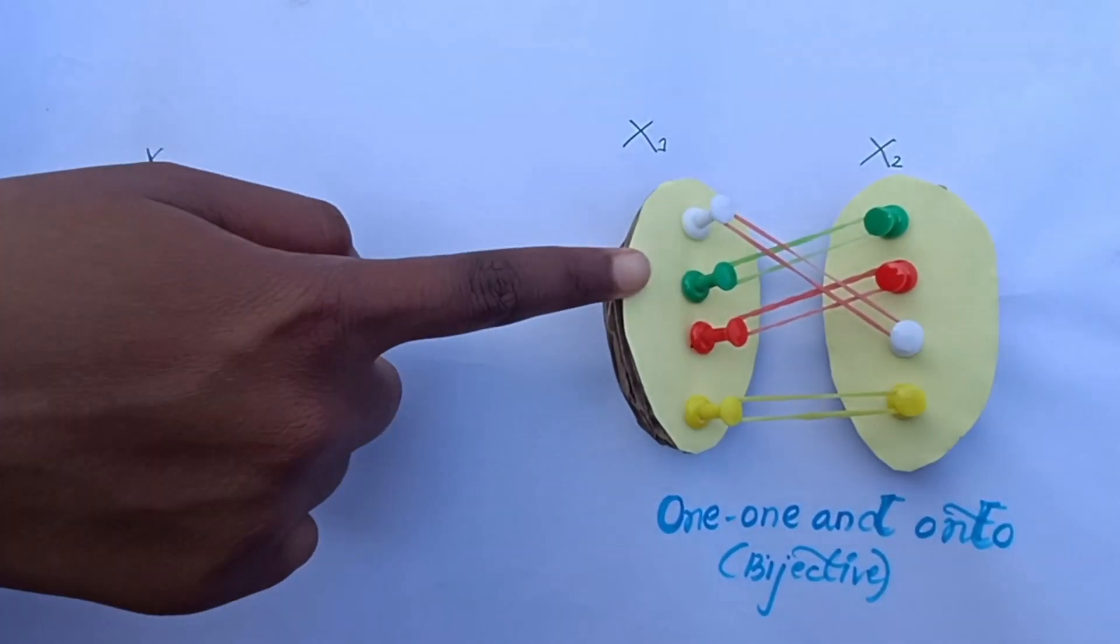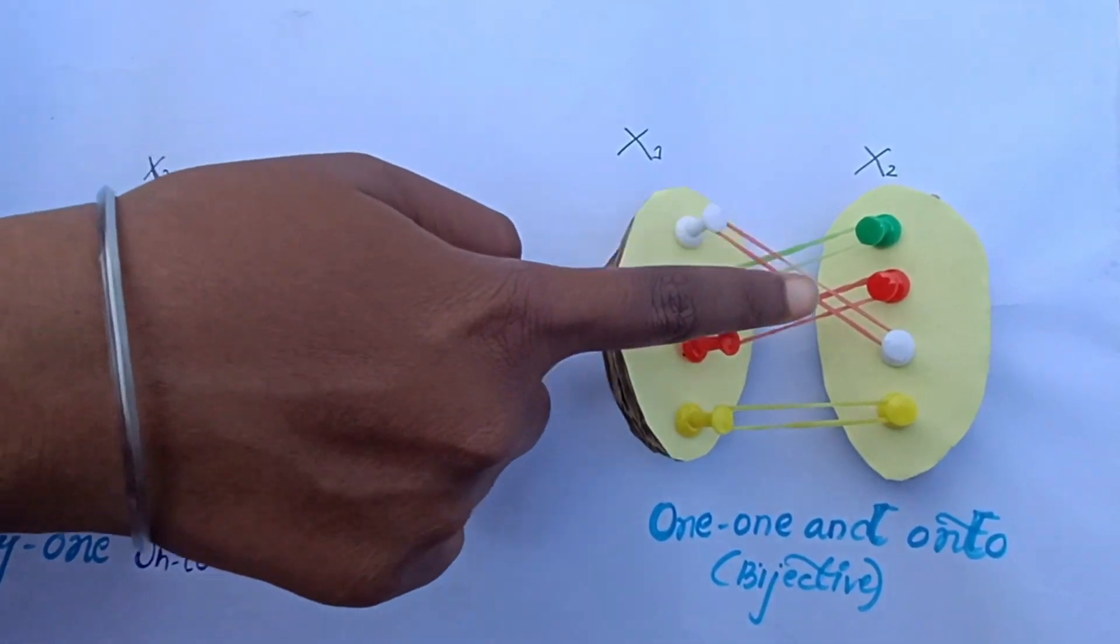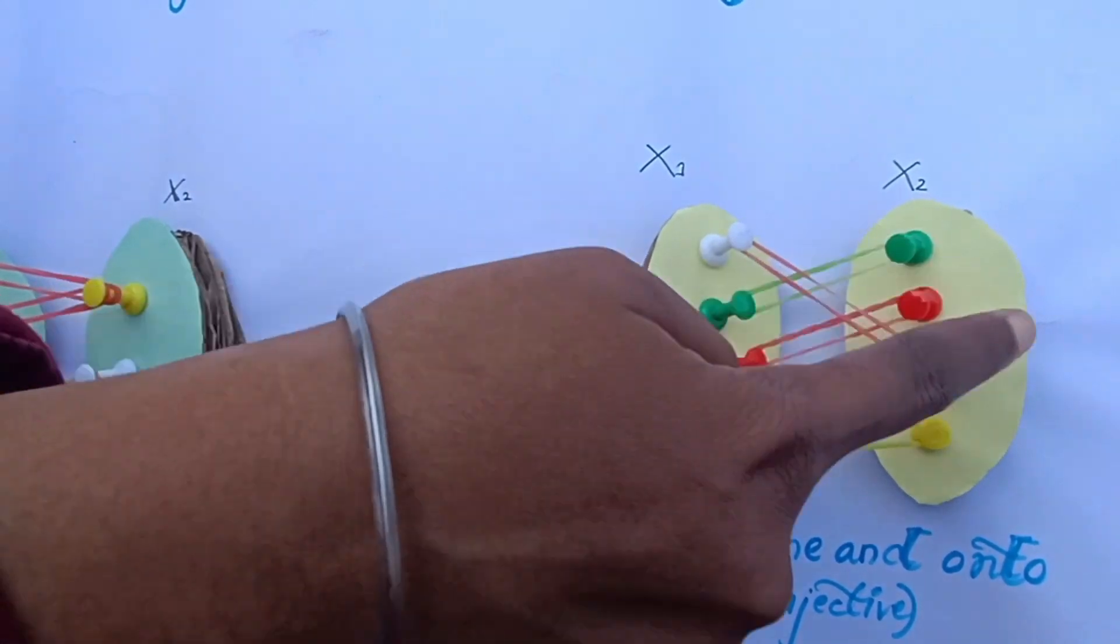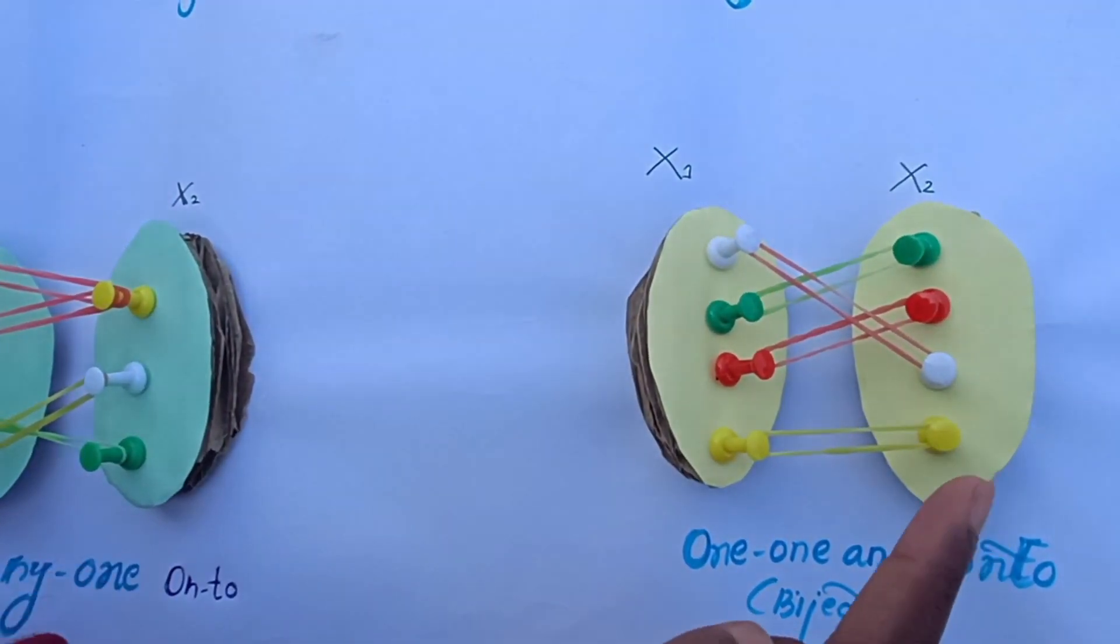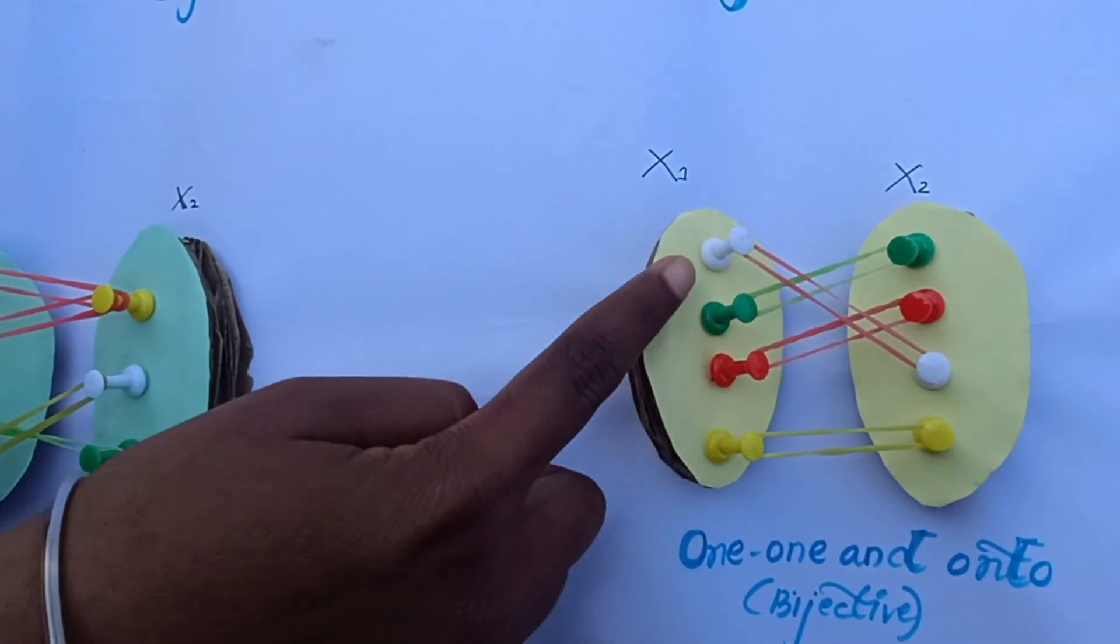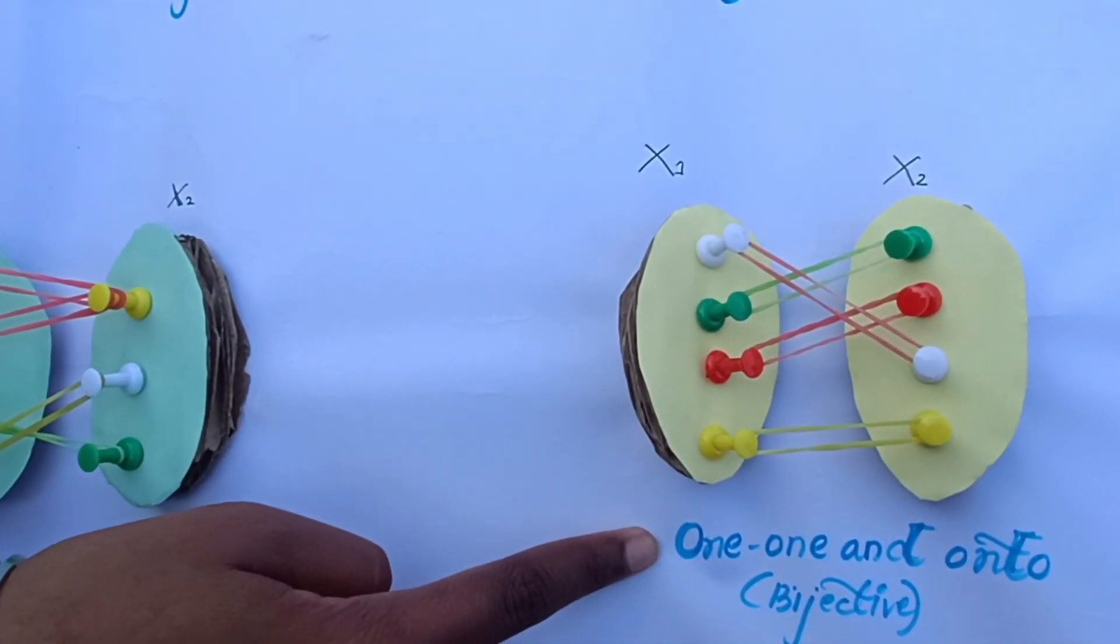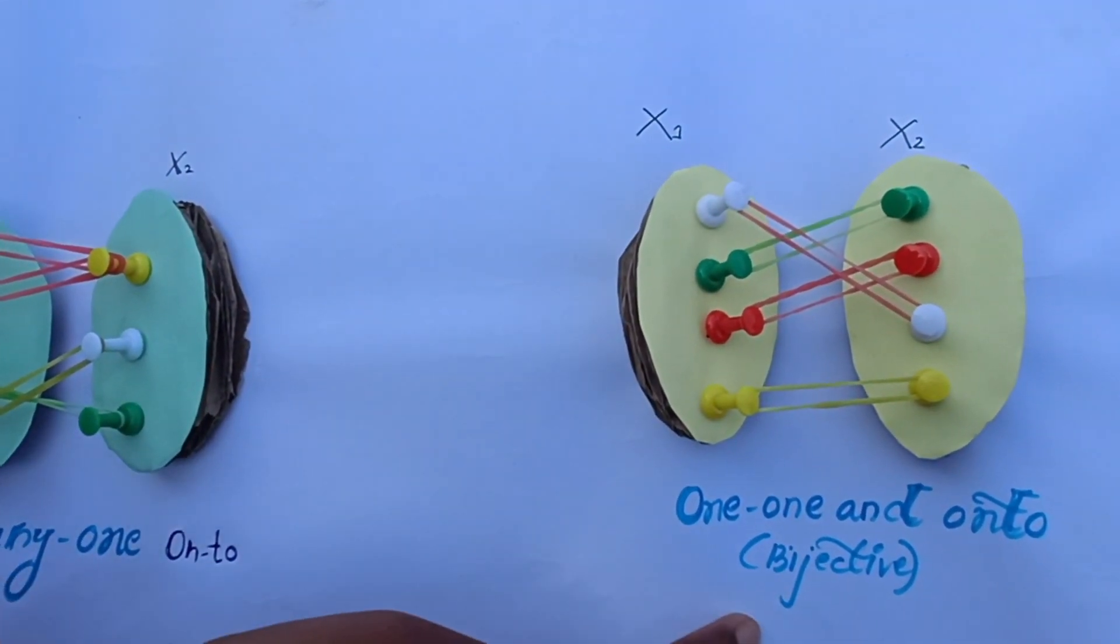Here, each element of X1 is related to one and only one element of set X2. And all elements of set X2 have their preimage in set X1. So, this is a one-one and onto function. It is also known as a bijective function.